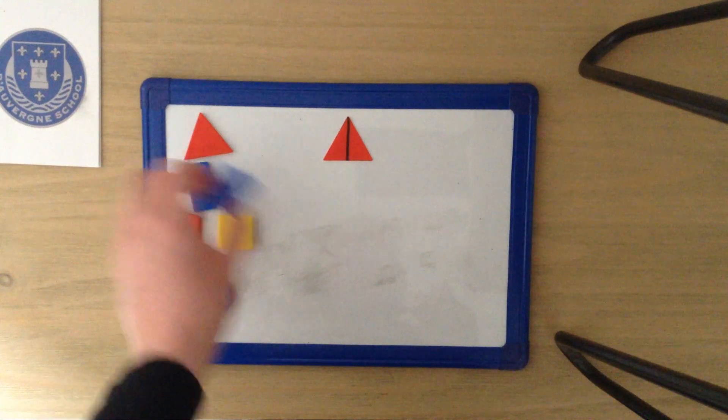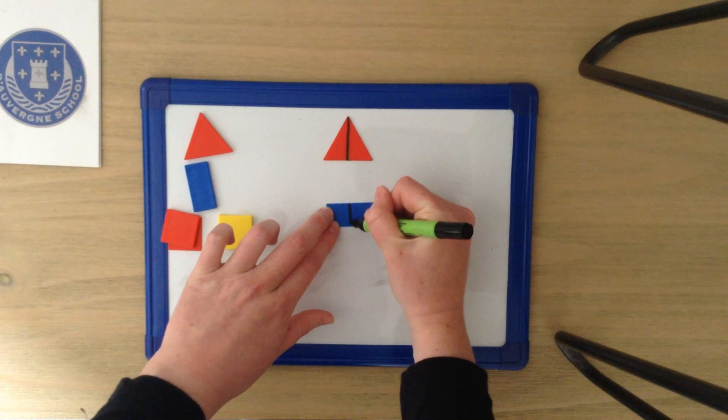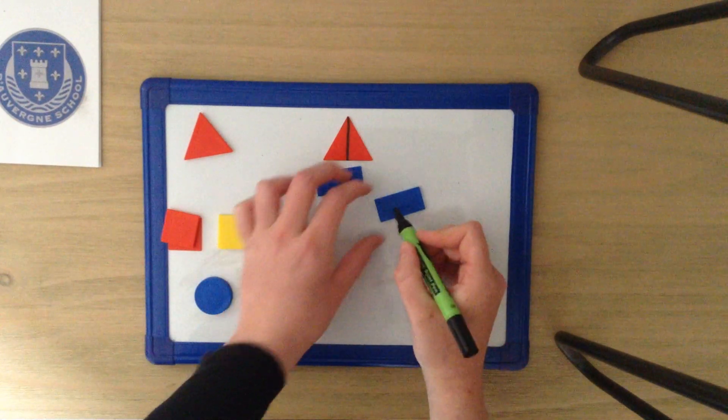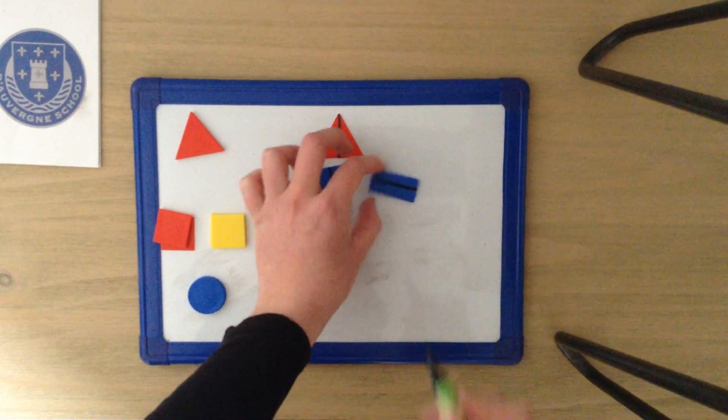On our rectangle, we had a line of symmetry there. We also could fold it this way as well to show the line of symmetry.